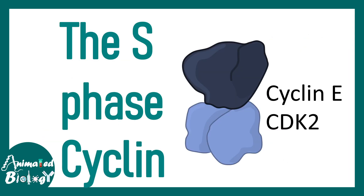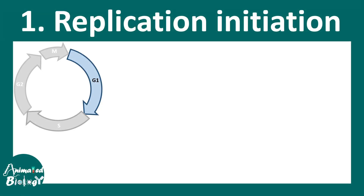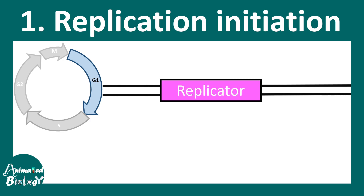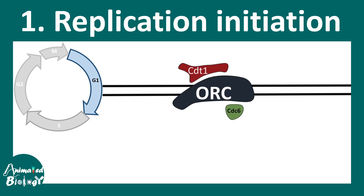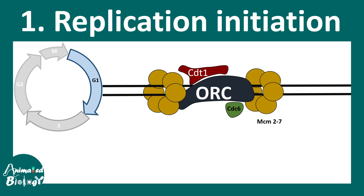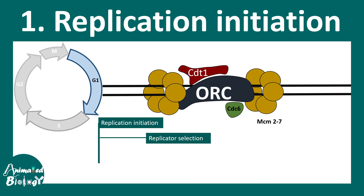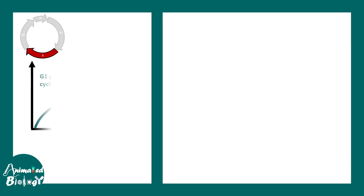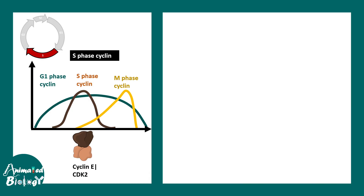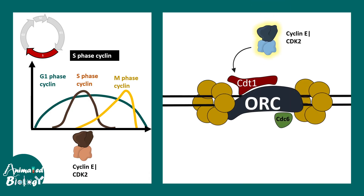Moving into S phase cyclins — the S phase cyclin is cyclin E, and CDK2 is its corresponding partner. At the end of G1, the replicator sequence is already bound to the origin of replication complex, which also binds CDT1 and CDC6, and loads the MCM2-7 helicase that forms the replication bubble. This requires a licensing event provided by cyclin-dependent kinases. In S phase, the cyclin E/CDK2 complex phosphorylates CDT1 and CDC6, thereby allowing the replication bubble to form.